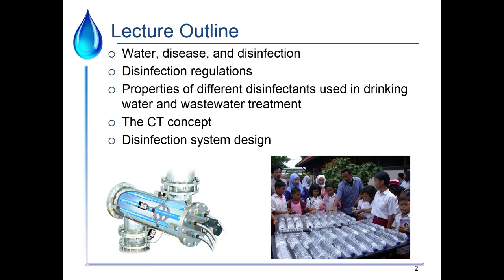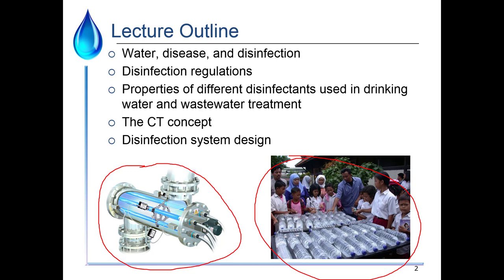Here we are at Chapter 10: disinfection. This is really the main thing that we want to do in drinking water treatment — removing pathogens, trying to keep ourselves safe. In a third-world context, disinfection is sometimes the only thing that we do. In this case, bottles are being exposed to sunlight to remove pathogens. Here's another example of disinfection in a first-world context: an ultraviolet radiation disinfection chamber.